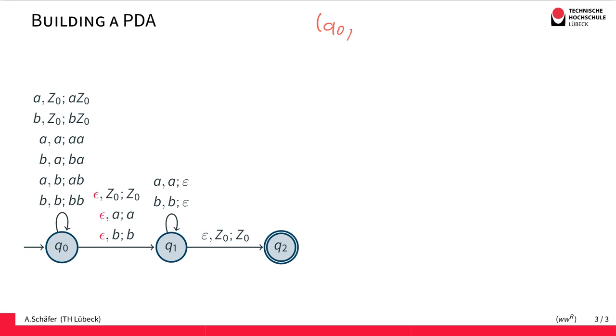So we start in Q0, and let's say we have the word ABBA, which is a palindrome of even length, so it should be accepted. And initially we have the Z0 on the stack.